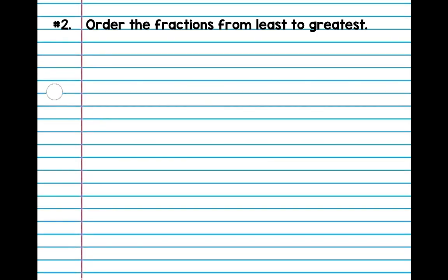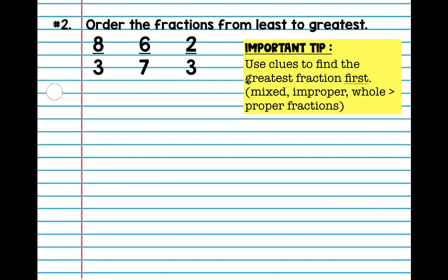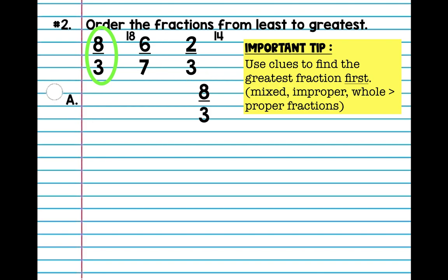Let's start comparing. We're going to order this from least to greatest — we have three fractions today. The number one rule: always start with the greatest fraction first. Mixed, improper, and whole fractions will always be greater than regular proper fractions. Let's cross-multiply. Six is close to seven so that one's pretty big; two is close to three, also pretty big. Seven times two is fourteen, and six times three is eighteen — so that one's the second. And then we have the least fraction.